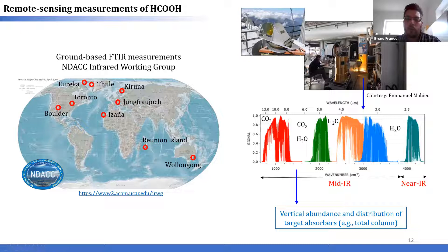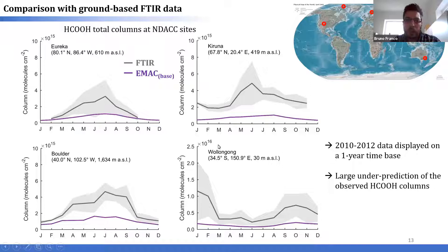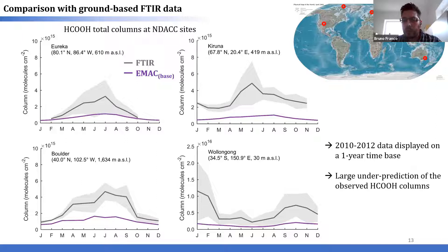Let's consider the comparison between the model results in its base case configuration and the FTIR measurements at a few stations — Eureka in the Canadian Arctic, Kiruna in Sweden, Boulder, and Wollongong in southeast Australia. The data displayed are a three-year average of formic acid total columns. The FTIR measurements are in gray while the model-simulated columns are in purple. At first glance, it's pretty clear that the model, despite implementing all known sources of formic acid, completely underestimates formic acid at these stations. This nicely illustrates the long-standing issue with formic acid.